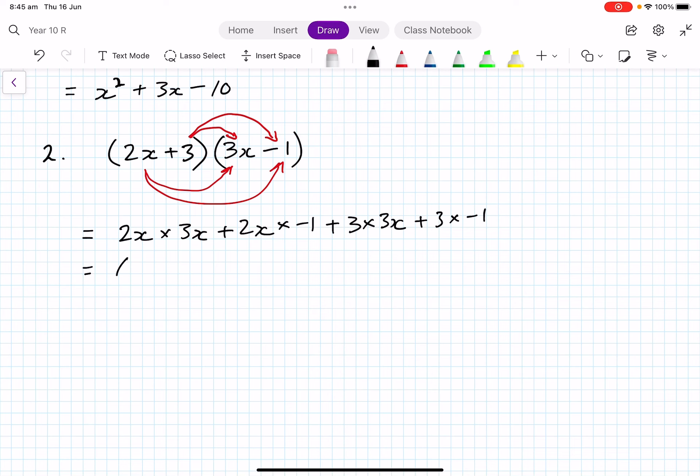And if I then simplify, we get 6x squared. 2 times 3 is 6, x times x is x squared. Then I get 2x times minus 1, that becomes minus 2x. The negative one flips the sign. Then I have 3 times 3x, that's plus 9x. 3 times 3 is 9, and then the x term just stays like that. And then 3 times minus 1 would be minus 3. Last step to simplify: 6x squared stays the same, minus 2x plus 9x is plus 7x, minus 3. Again, a binomial product we've expanded out.